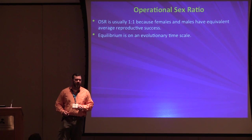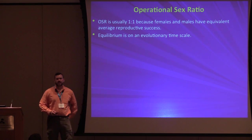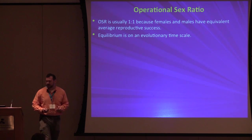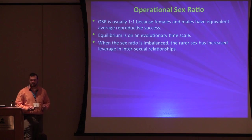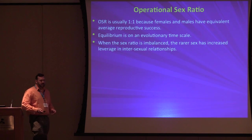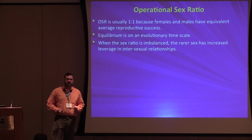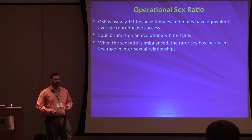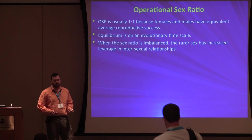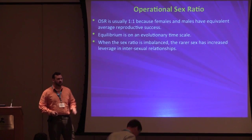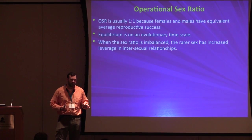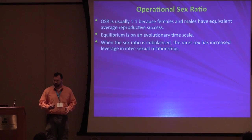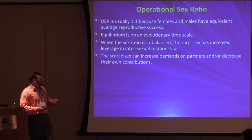Researchers since Darwin have noted sex-imbalanced populations — some with more males than females, some with more females than males. When you have an imbalance, you have classic economics of supply and demand: when there is more demand than supply, those supplying can raise the price. This combines with the somewhat divergent reproductive strategies of men and women.